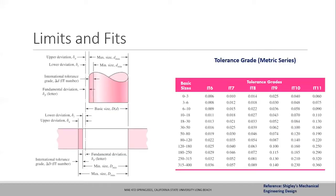To recap, we have a scenario where two components need to be fitted together. One component, called the shaft, has a specific dimension represented by the basic nominal size, shown by the dotted line. The shaft is not manufactured at its basic dimension - due to manufacturing error, the turning operation may not achieve the exact basic size, resulting in tolerances and deviations from the basic size.